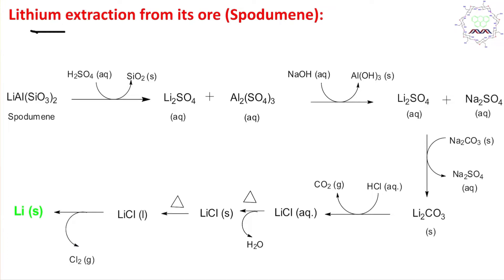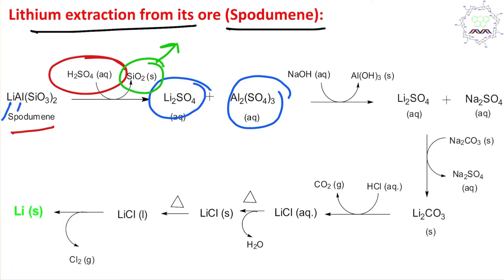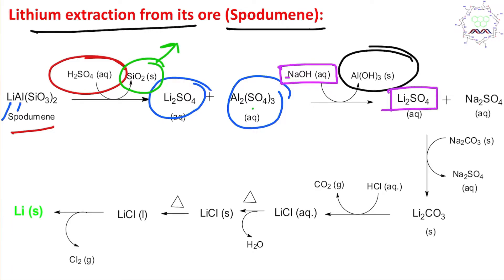The second method for lithium extraction is the spodumene-based method. Spodumene is first treated with sulfuric acid — since spodumene is lithium aluminum silicate, the reaction with H₂SO₄ converts lithium and aluminum into their corresponding sulfates, which are water soluble, while the silicate is converted into silica solid and separated out. From this aluminum and lithium ion mixture, aluminum is separated in the form of aluminum hydroxide — an insoluble precipitate — by addition of aqueous sodium hydroxide. After addition of sodium hydroxide, what remains in the medium is lithium sulfate and sodium sulfate.